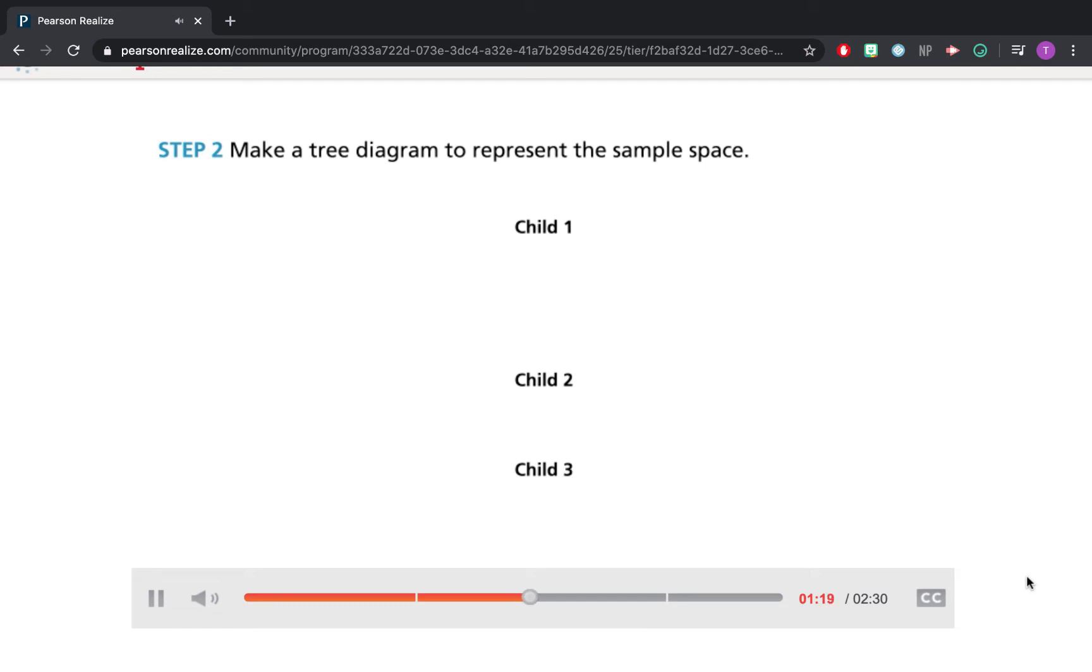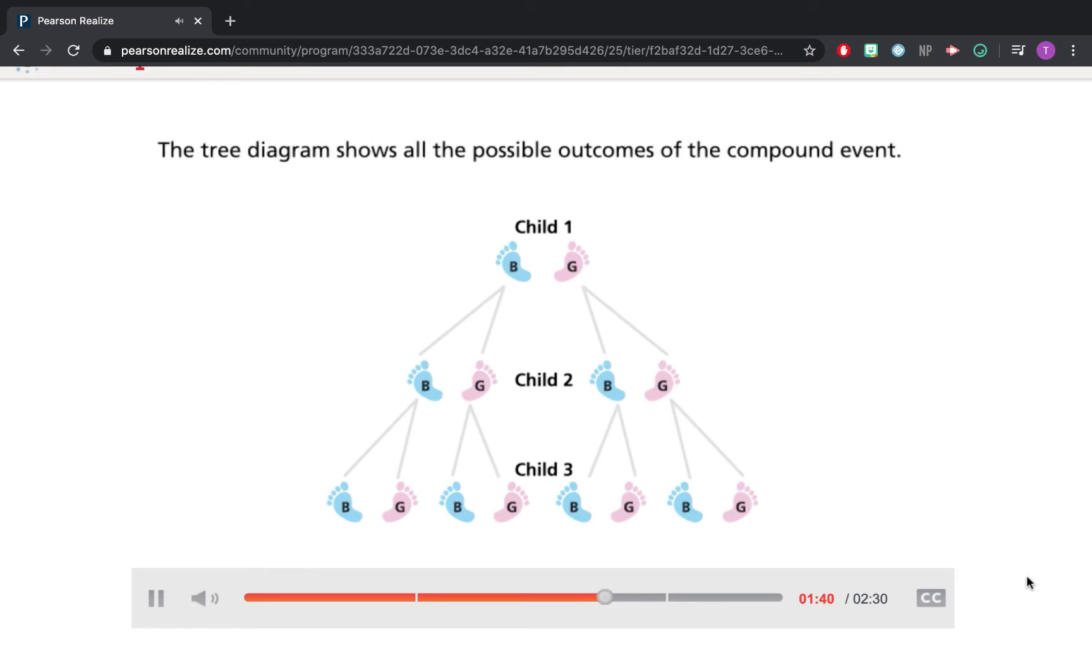Our next step is to make a tree diagram to represent the sample space. The diagram begins with child one, who is either a boy or a girl. That's two outcomes so far. For each outcome for child one, there are two outcomes, boy or girl, for child two. And for each outcome for child two, there are two outcomes for child three. The tree diagram shows all the possible outcomes of the compound event. For example, we can follow the branches on the left side of the diagram, which shows the outcome of a boy, then another boy, then a third boy. Label this outcome BBB.